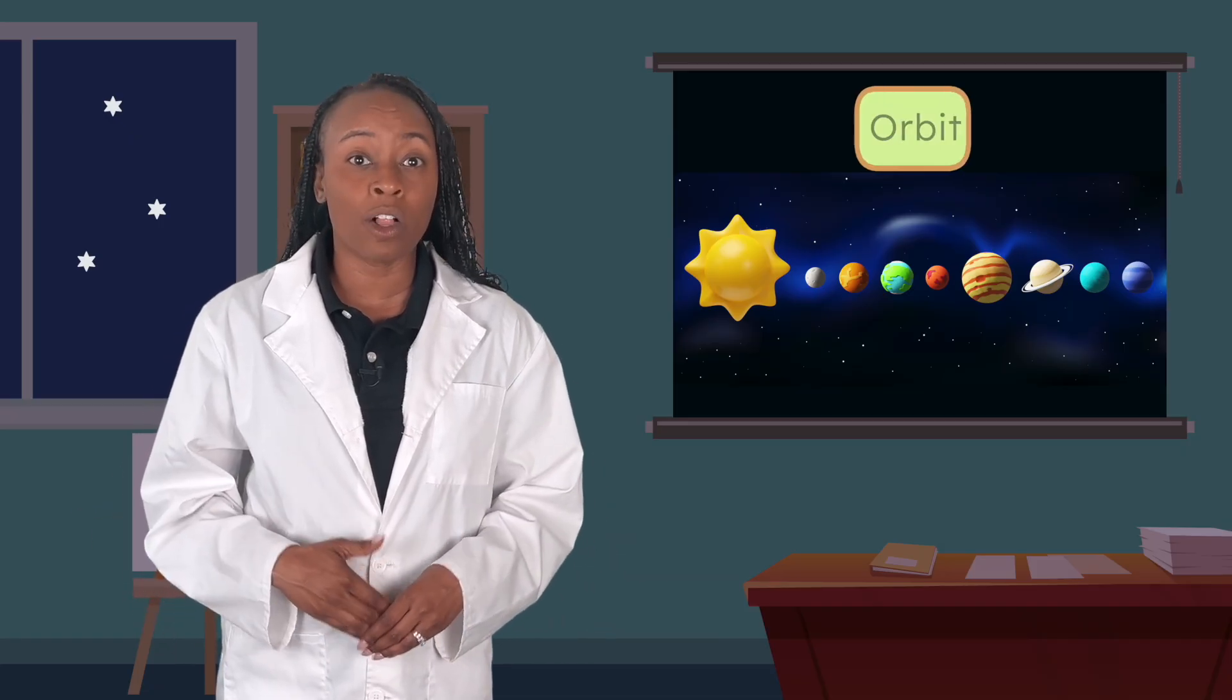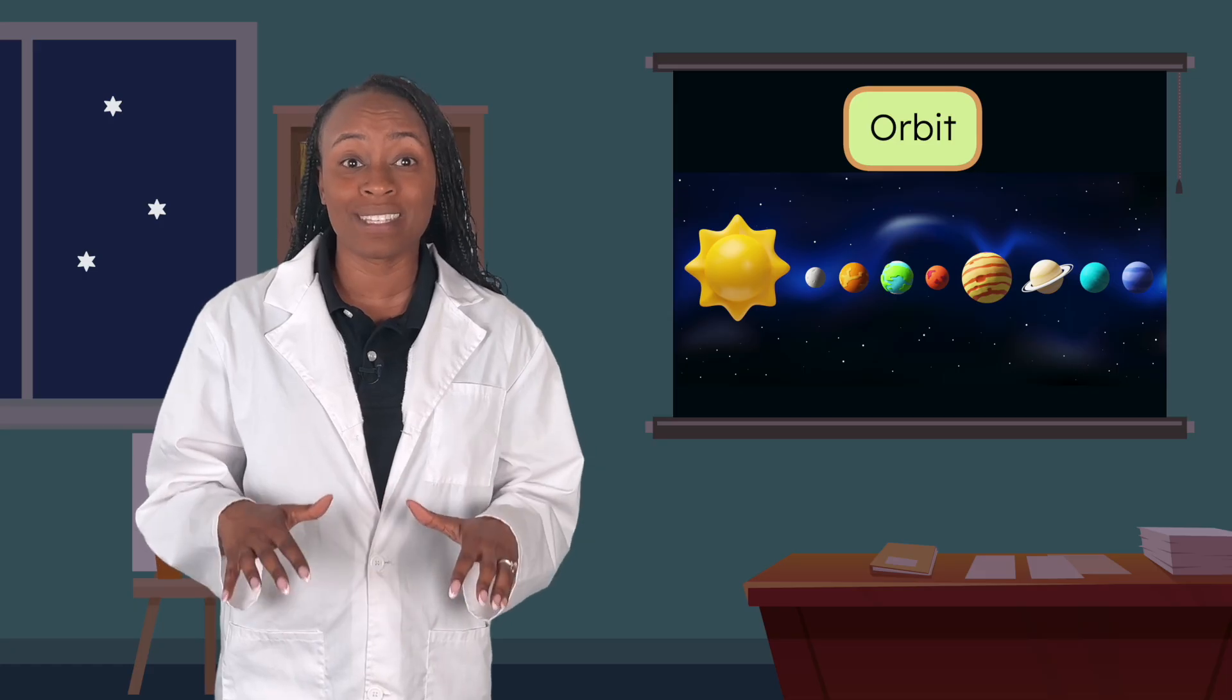And there's one thing all of these planets have in common or do the same. Each of these planets all orbit or move in a path around the Sun.